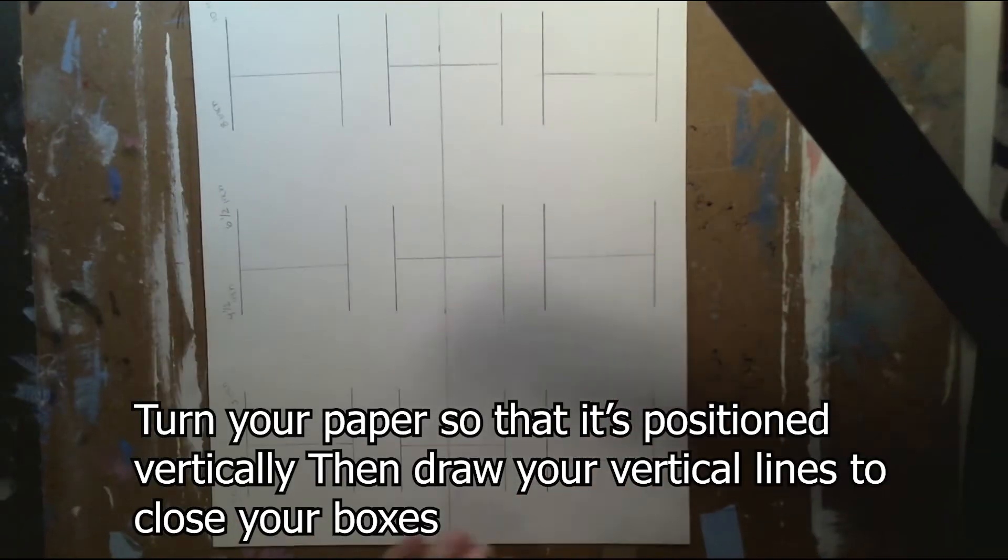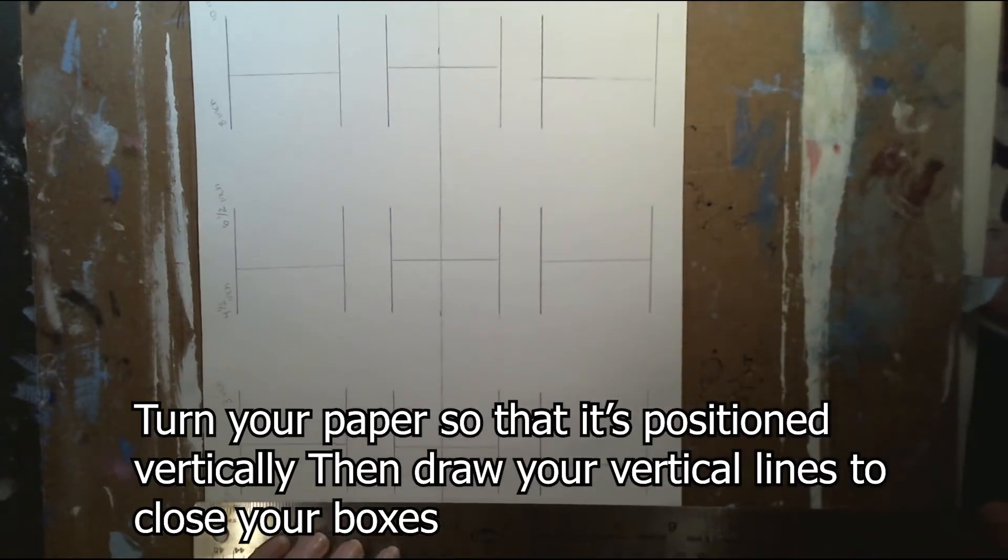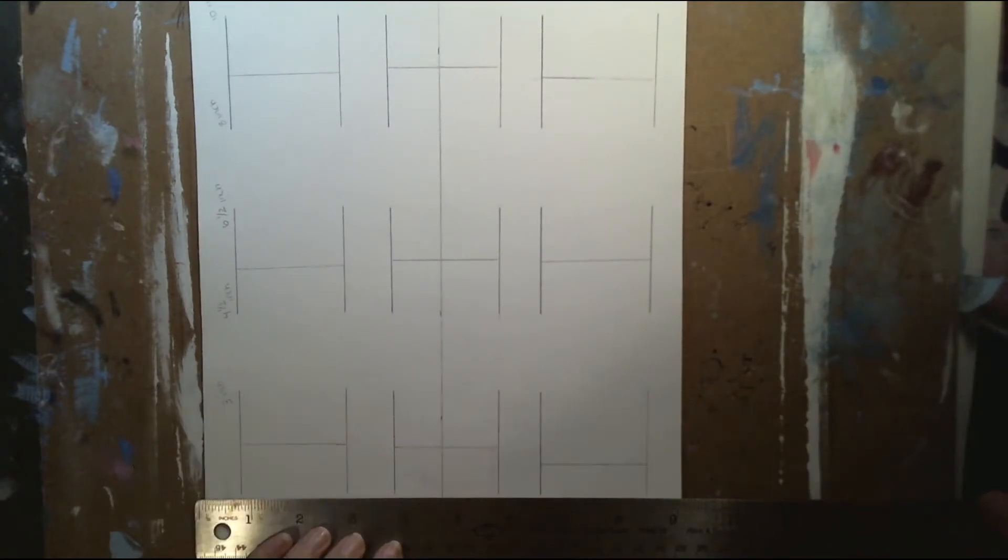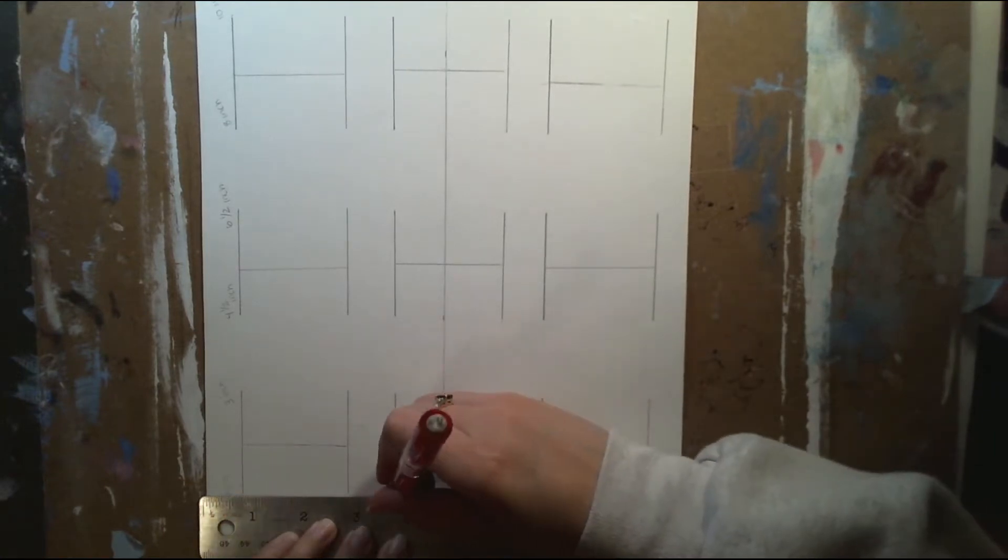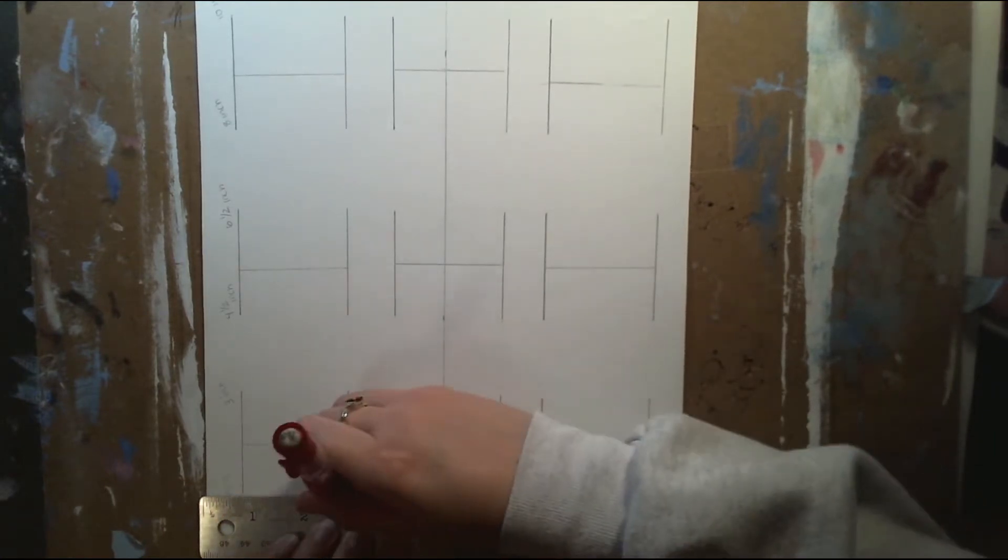Then my next step is I'm gonna turn my paper so that it's positioned vertically. Then I'm just gonna use my ruler and draw in my horizontal lines to close off all of my boxes.